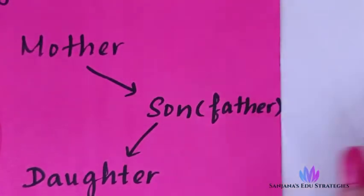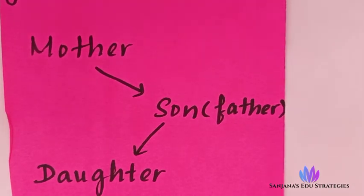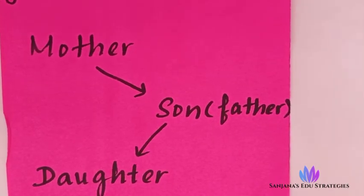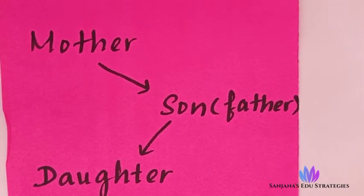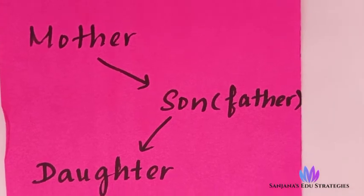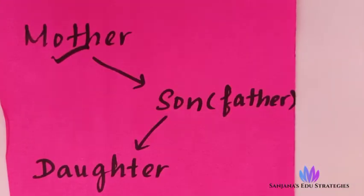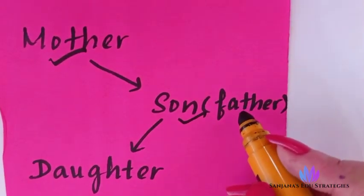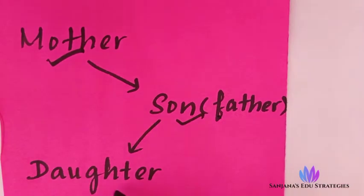What is crisscross inheritance? If parents are having some disease or are carriers of a disease, that disease will be inherited by the daughters also. But in crisscross inheritance, the gender will change. If the mother has a disease, then the son will also have that disease. Once the son becomes a father, that father's daughter will also get that disease.